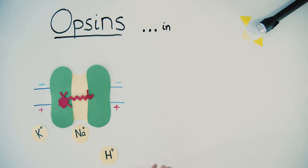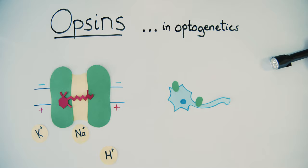In optogenetics, researchers have taken cells like neurons and genetically introduced opsins to artificially control their firing.